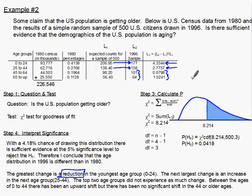That is the end of those two examples. The next video will move on to the next type of chi-squared test.